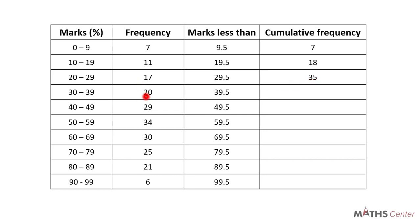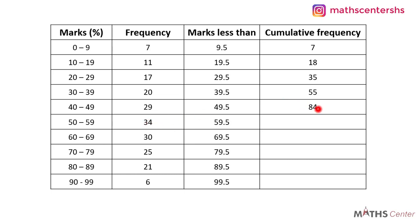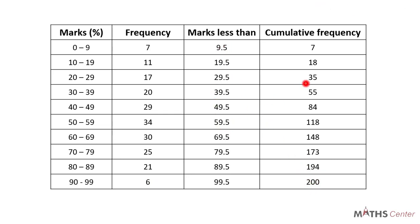The next frequency is 20, so the cumulative frequency will be 35 plus 20, giving us 55. To get the next cumulative frequency, we add the frequency of 29 to the previous cumulative frequency of 55, giving 84. The next is 34 plus 84, which is 118. Then 30 plus 118 is 148. Then 25 plus 148 is 173. Then 21 plus 173 is 194. And the last one is 6 plus 194, which is 200. We now have the marks less than and the cumulative frequencies.